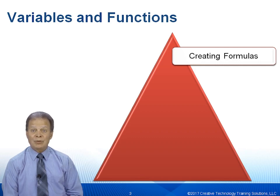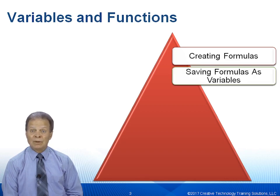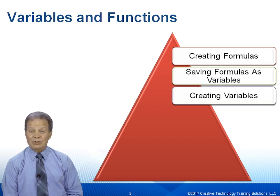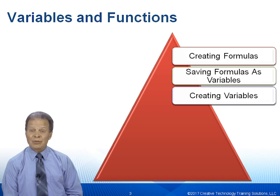In terms of content for variables and functions, we're going to start by creating a formula directly within a vertical table report. Then we're going to show you how to take that formula, find out what limits you have by doing it as a formula, and then convert it to a variable using the built-in feature. After that, we'll show you how to create the variable directly — which is what you're going to do most of the time. You can create a whole collection of local variables, stored under the variables tab in your available objects list.